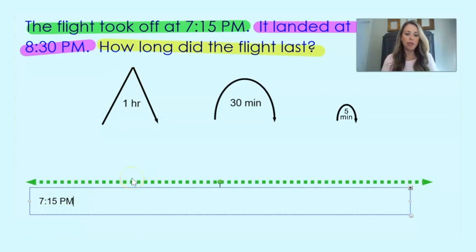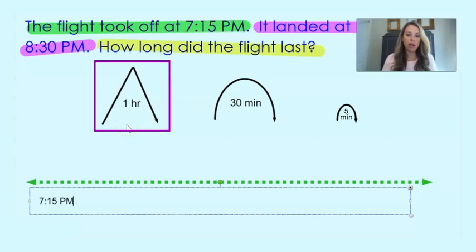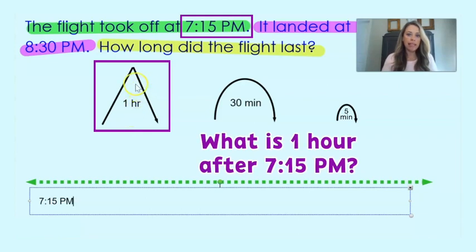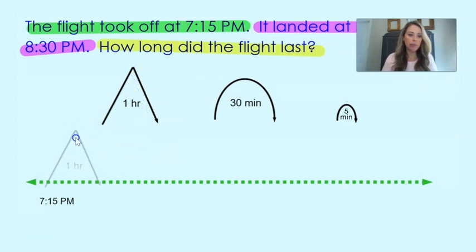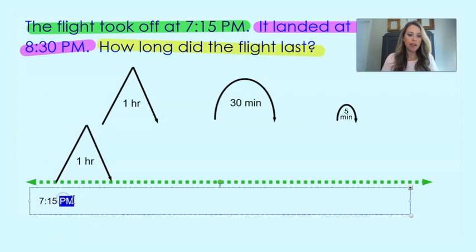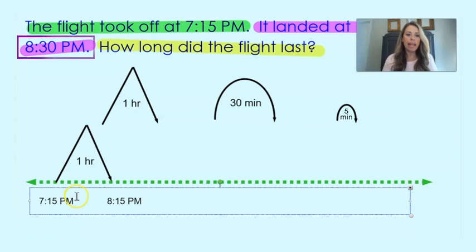What we're going to do is make jumps on our number line until we get to the end time, which we know is 8:30pm. If I think about jumping an hour, an hour after 7:15pm would put me at — what time do you think? Yeah, that would put me at 8:15pm. So let's go ahead and do an hour jump and mark that on our number line so we can keep track of our times.